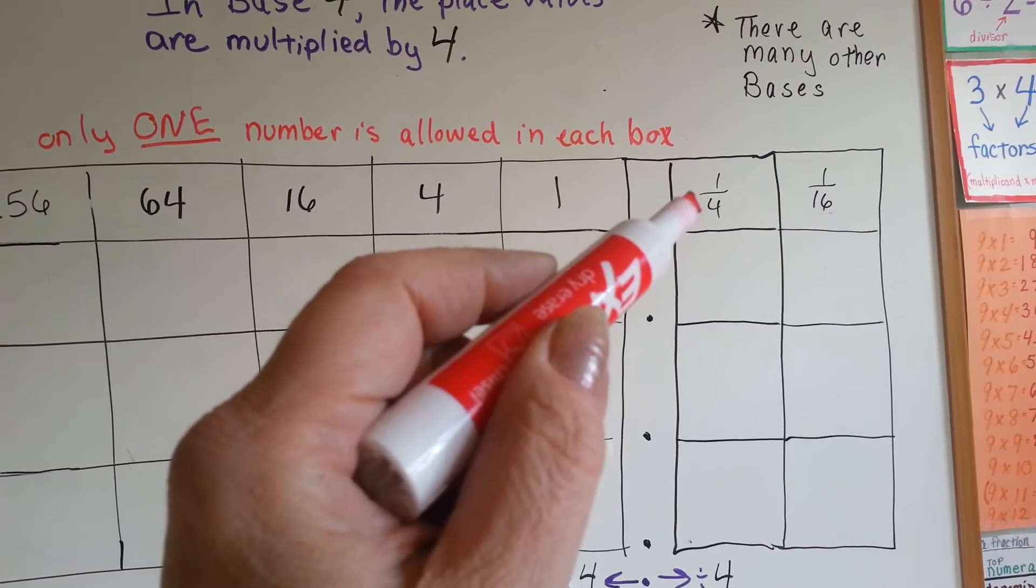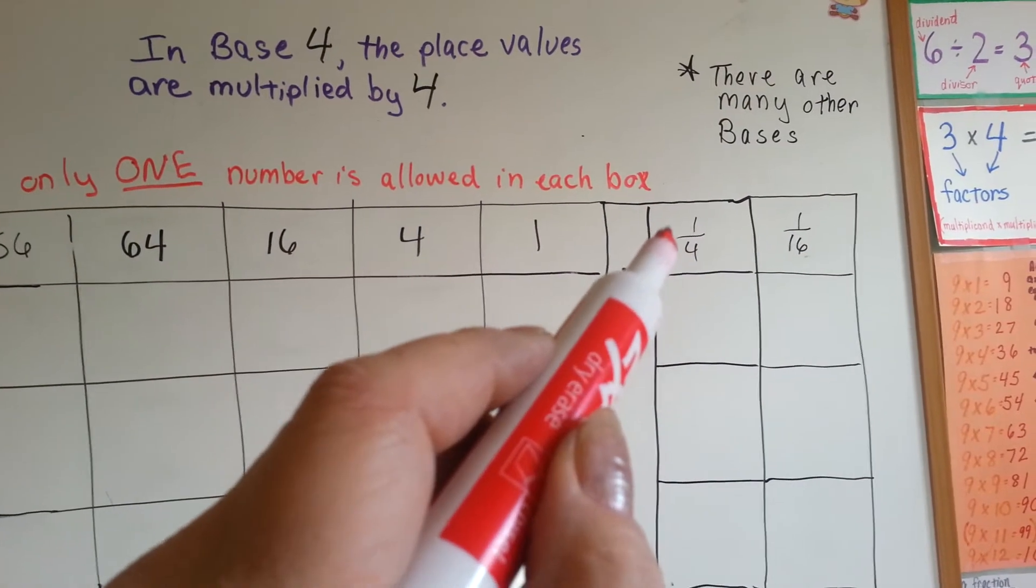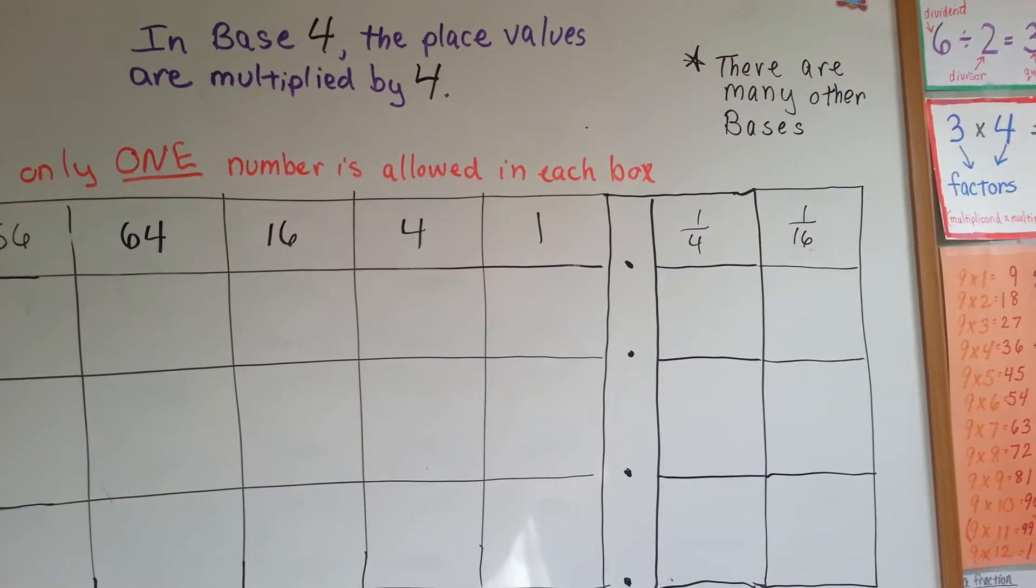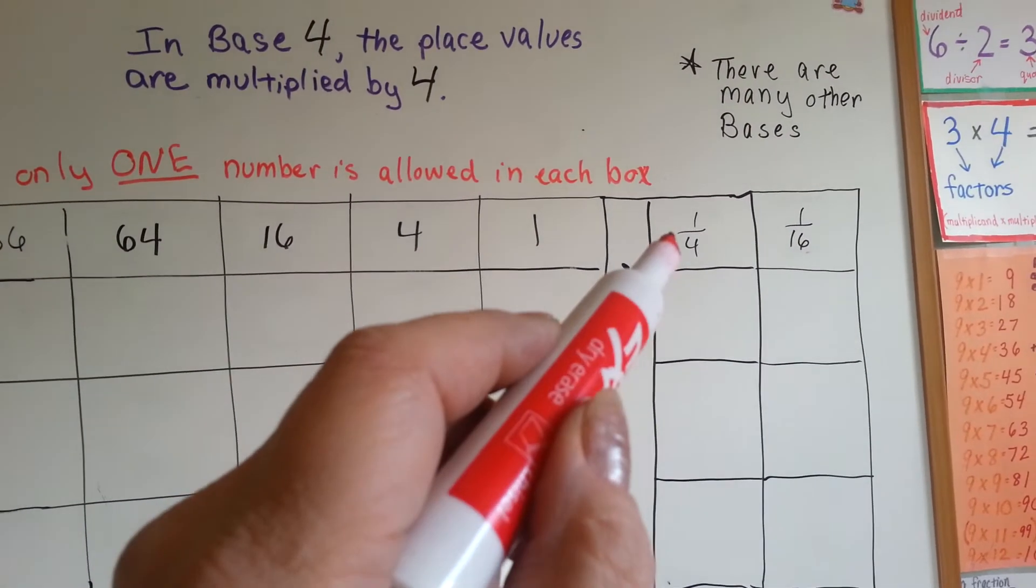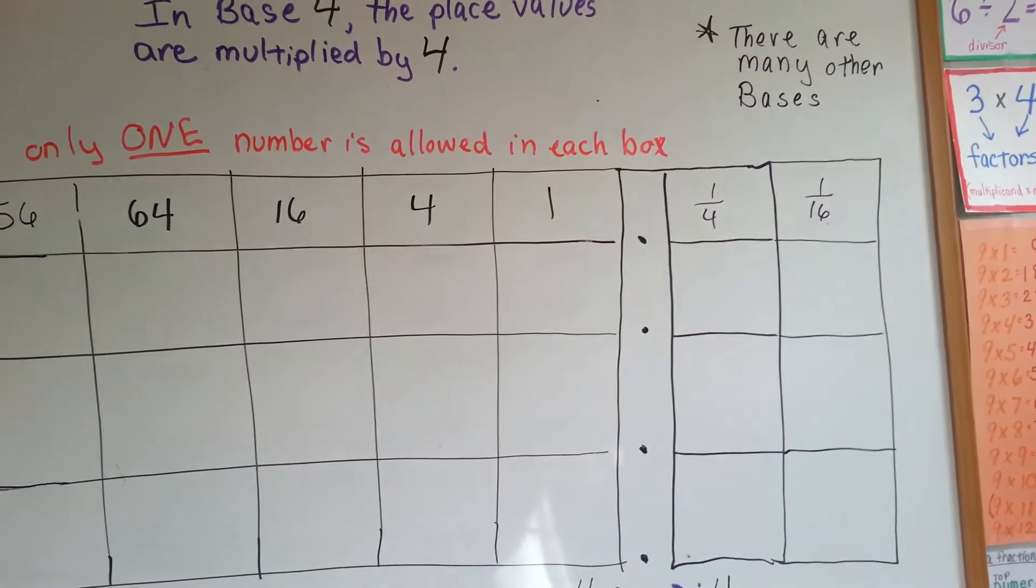Now, normally that would be the tenths place, wouldn't it? And that would be the hundredths place. But because we're in base four, it can't be bigger than four. And four times four is sixteen, so that's one-sixteenths.